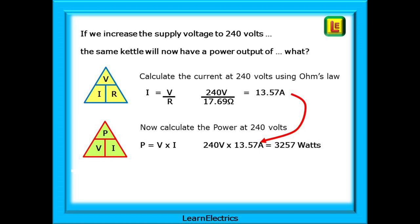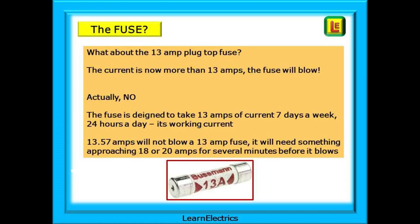If we increase the supply voltage to 240 volts, Ohm's Law tells us that 240 volts divided by 17.69 ohms gives a current of 13.57 amps. Knowing the current, we can calculate the power at 240 volts: 240 volts multiplied by 13.57 amps equals 3,257 watts — an increase of nearly 300 watts. But what about the 13 amp plug-top fuse? The fuse is designed to carry 13 amps continuously; 13.57 amps will not blow it.